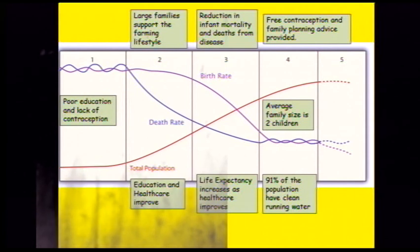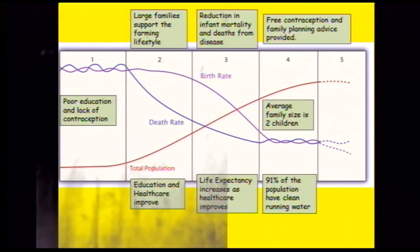In stage three, the birth rate starts to decrease because of a reduction in the infant mortality rate, which means parents in poorer countries don't need to keep having so many children to replace the children that might die. The introduction of contraception means they're more aware of how they can control their birth rate. Life expectancy increases as healthcare improves, which means the death rate is also falling and the total population continues to rise.